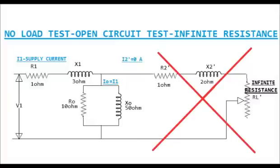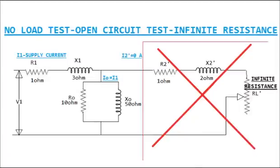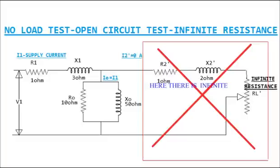In no load test, the resistance of load is made infinite. In induction motor this is made by making slip 0. As there is infinite resistance at rotor side, the current will not flow through R2 dash, X2 dash and RL dash.